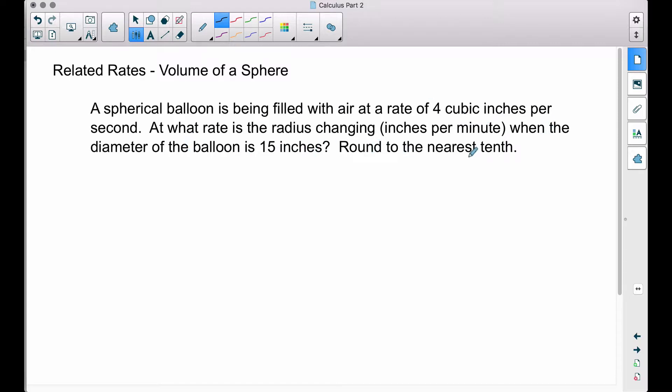We have a spherical shaped balloon and the air is being pumped in at a rate of 4 cubic inches per second. The formula for the volume of a sphere is volume equals 4 thirds π r cubed.